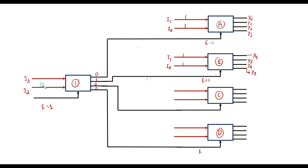If I3=1 and I2=0, the third output line is high and is connected to the enable of decoder C, so decoder C is active and the rest are inactive. With inputs I1 and I0: if 0,0 then Y8 is selected; if 0,1 then Y9; if 1,0 then Y10; and if 1,1 then Y11 will be high.